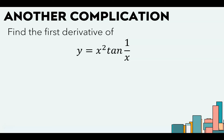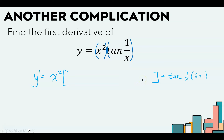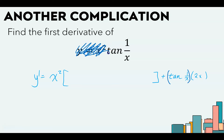This one is a little more difficult because in addition to 1/x being the input to tangent — requiring the chain rule there — we have x squared being multiplied by tangent of 1/x, so we need the product rule. The derivative of a product of two functions is the first function, x squared, times the derivative of the second function — tangent of 1/x, which I'll fill in after. Plus the second function, tangent of 1/x, times the derivative of the first function, 2x. Now focusing on the derivative of tangent of something: it's secant squared of that same something. That something is 1/x, which has a rate of change of negative 1/x².